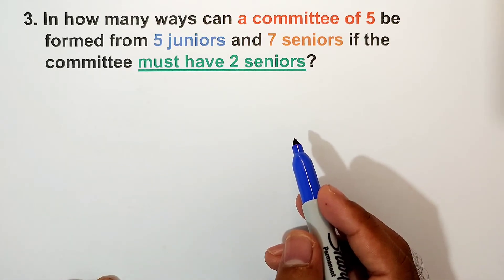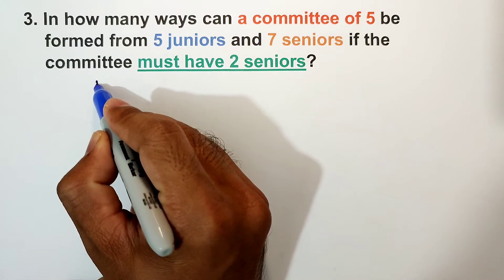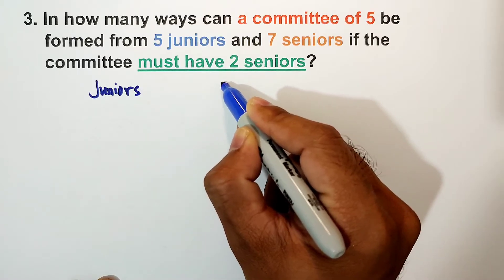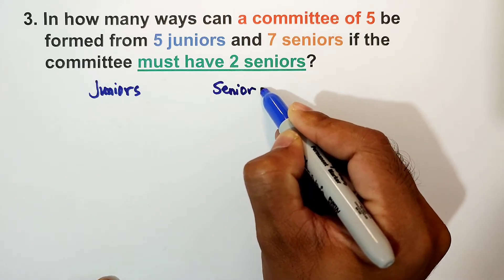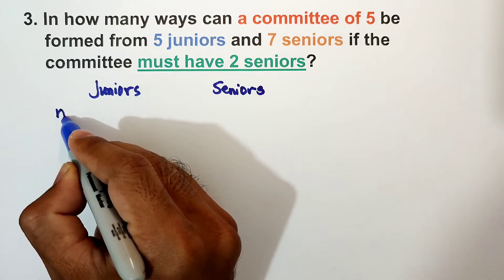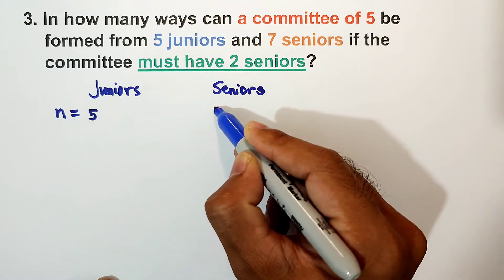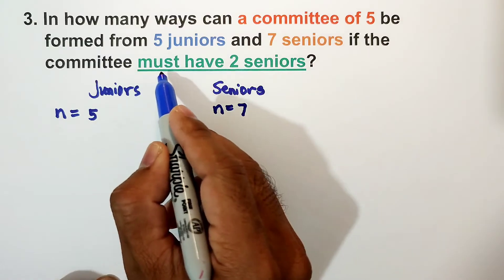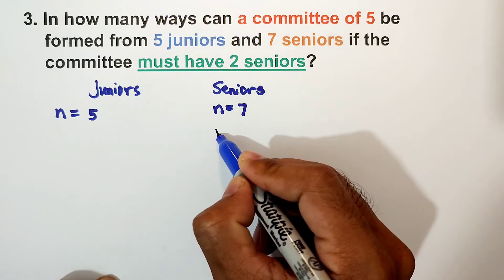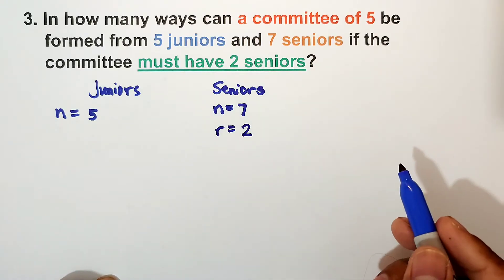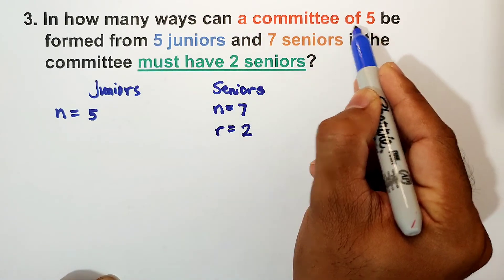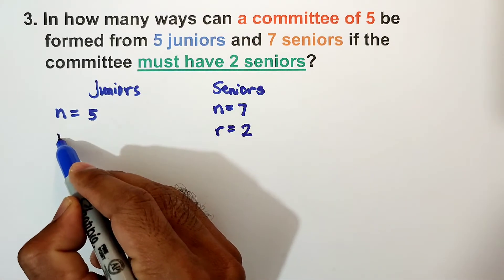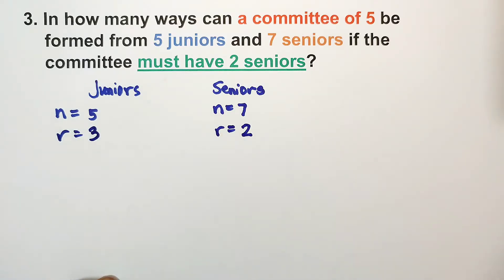Let us identify the values of N. For juniors, N is equal to five. For seniors, N is equal to seven. The committee must have two seniors, so R is equal to two. We need five committee members total, and since we already have two seniors, the remaining juniors needed is three. So R is equal to three for juniors.